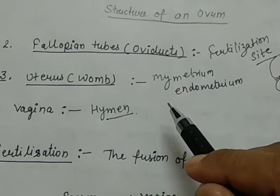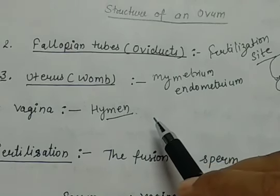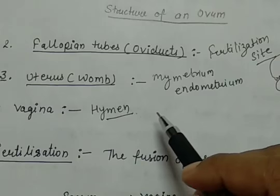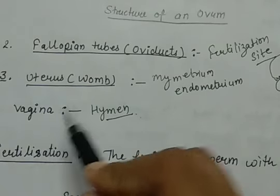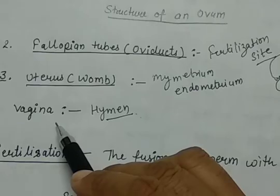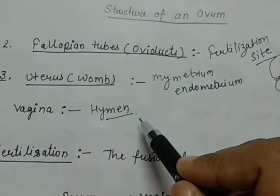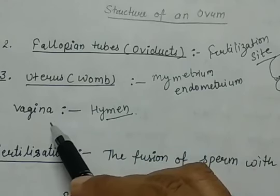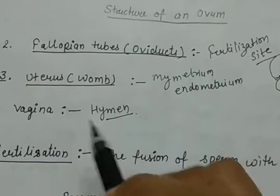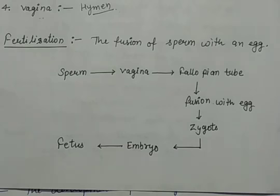The vagina is the passageway for menstrual flow. There is a menstrual cycle which occurs in females every month, because of which bleeding happens and the menstrual liquid comes out from the female body through the vagina. The vagina also forms the birth canal — the matured baby comes out of the body of the female through the vagina. So we have discussed all the parts of the female reproductive system.